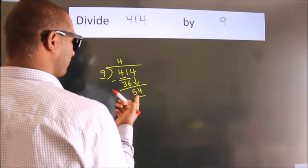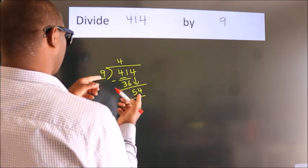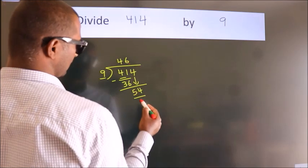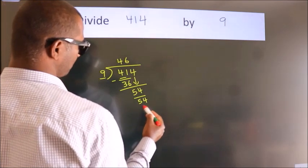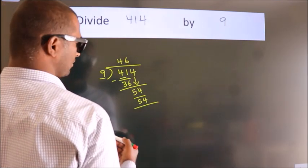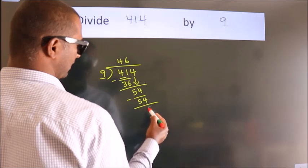When do we get 54? In 9 table, 9 times 6, 54. Now we subtract, we get 0.